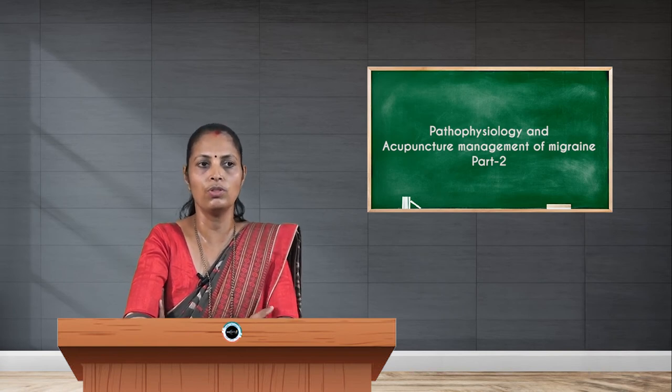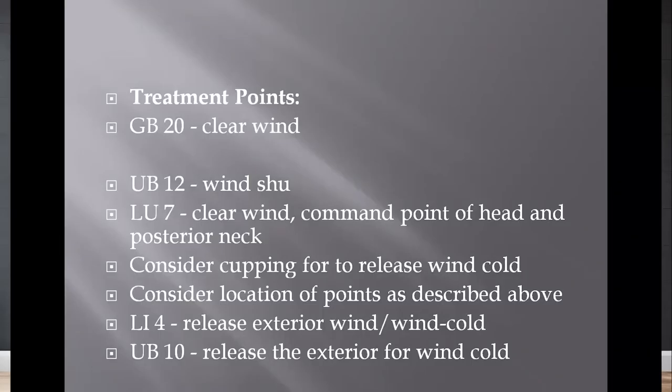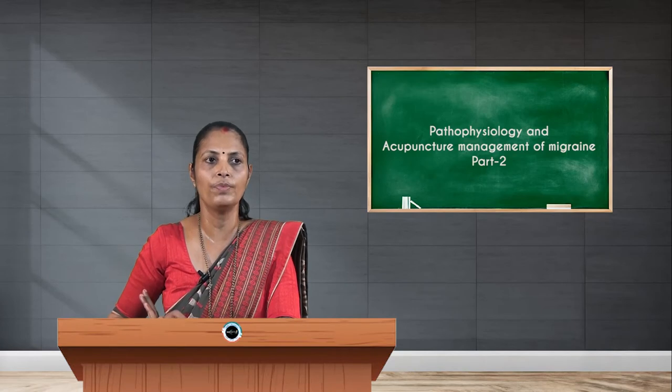One of the most commonly used points is LI 4, which is a potent analgesic point that helps in releasing the exterior wind cold. UB 10 is located just at the nape of the neck, 0.5 cun inside the natural hairline and 0.3 cun lateral to the midline; it is mainly used to release the exterior wind.